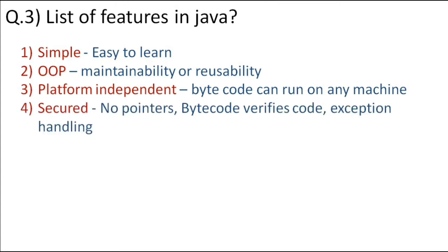Java is very secure because it does not use explicit pointers. Additionally, using bytecode, more security is achieved because bytecode verifies for security and checks for code that could cause problems to your application, so it won't allow that particular code. This is a major feature for achieving security.